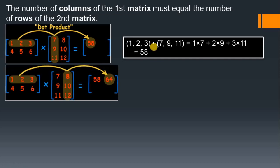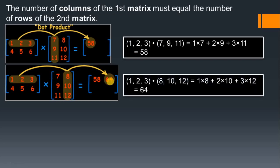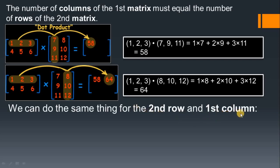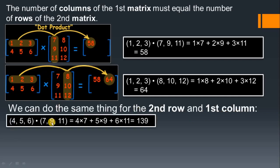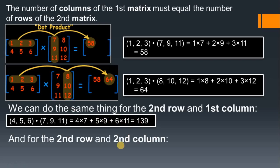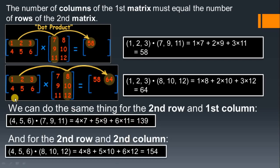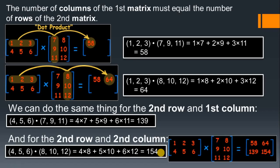The same procedure applies for the second column — the first row is multiplied with the second column and the answer is 64. Then we do the same for the second row and the first column: second row values are 4, 5, 6 and first column values are 7, 9, 11, giving 139. Then second row with second column — values 4, 5, 6 and 8, 10, 12 — gives 154. So the final answer is 58, 64, 139, 154. This is the logic of multiplication of two matrices.